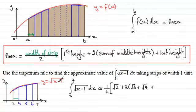So that is twice the sum of the middle heights. And now we just simply add the last height, which is when x equals 7. That's going to give us root 6.